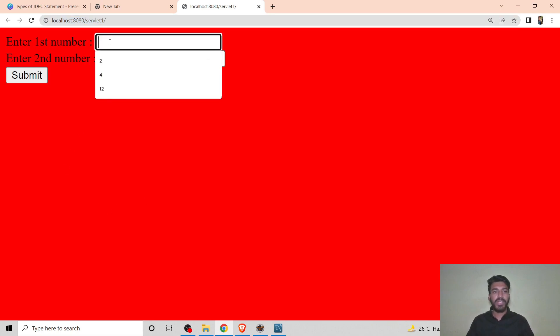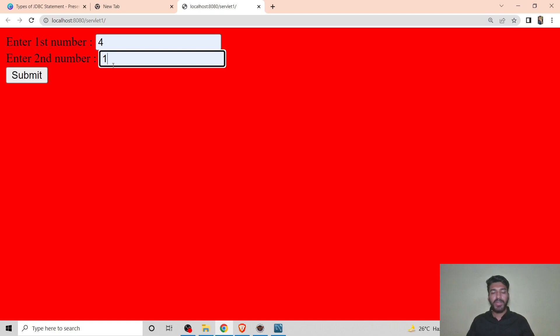This is our frontend in which I am entering 4 here and 1 here. So 4 plus 1, and in the database we have id 4 will be 8. So 4 plus 1 plus 8, the expected output will be 13.